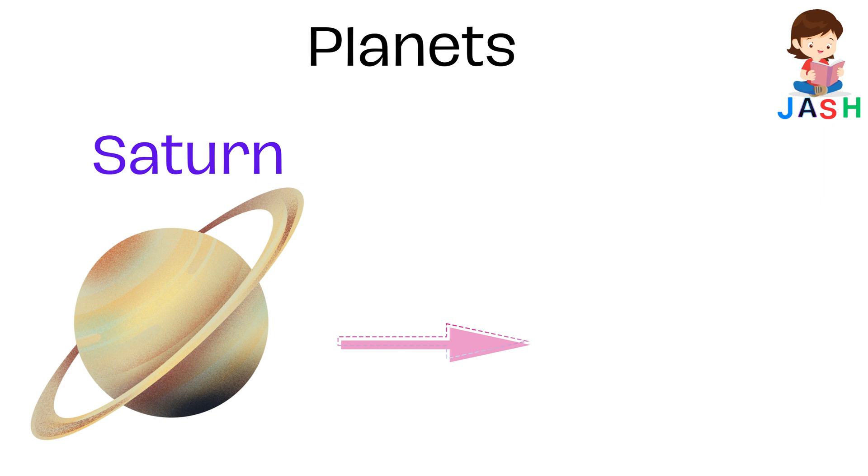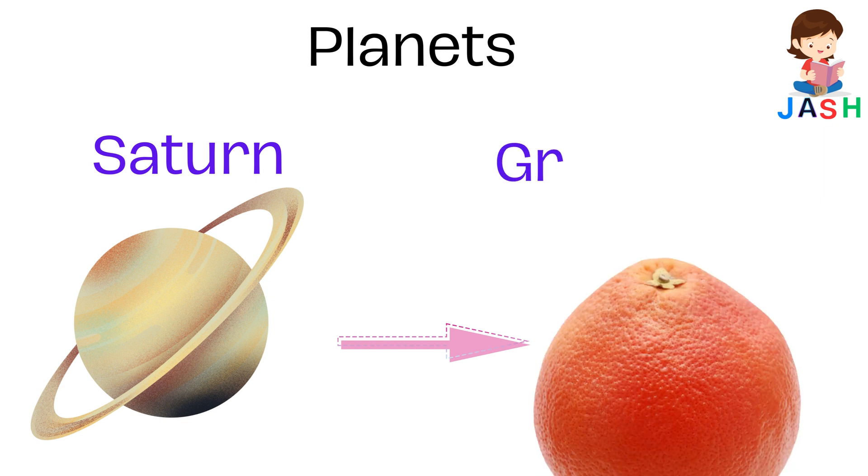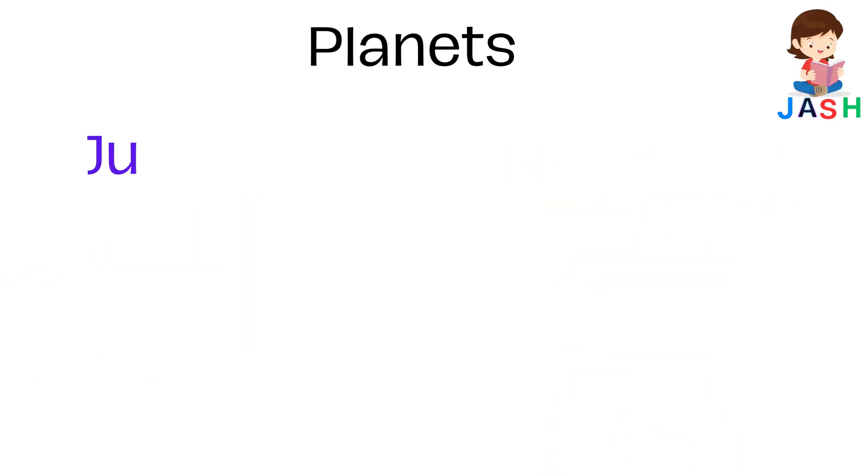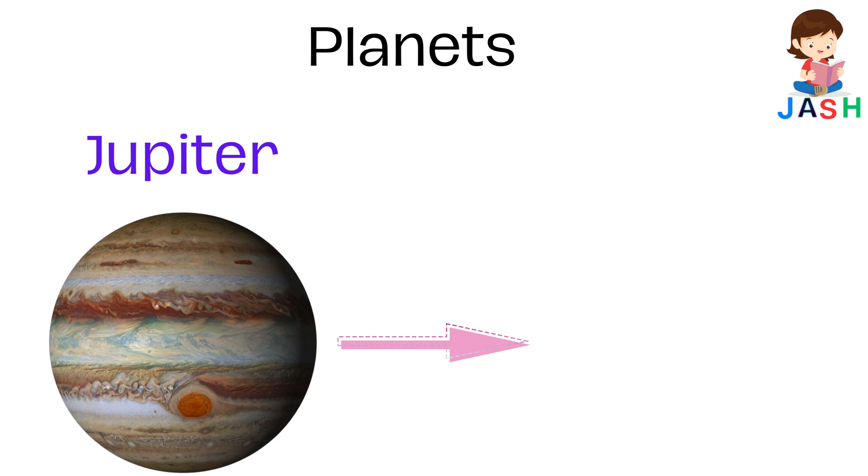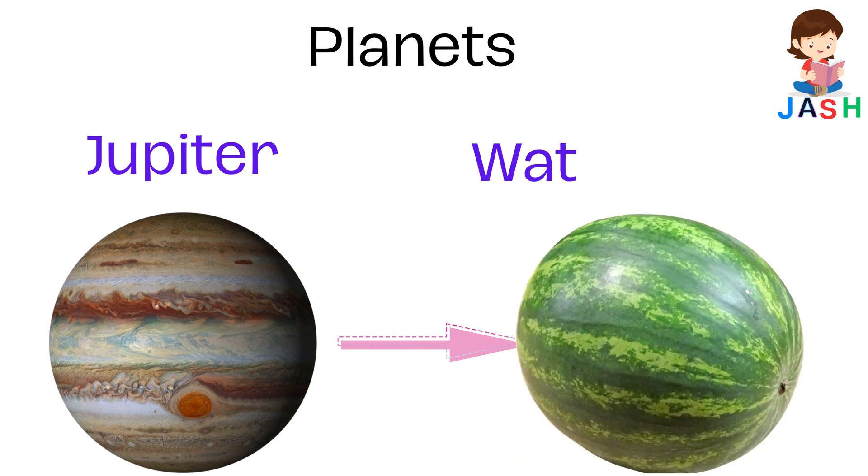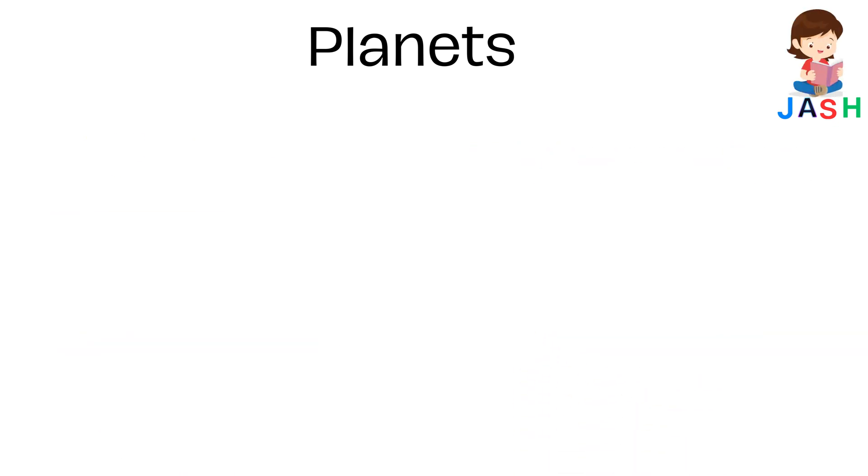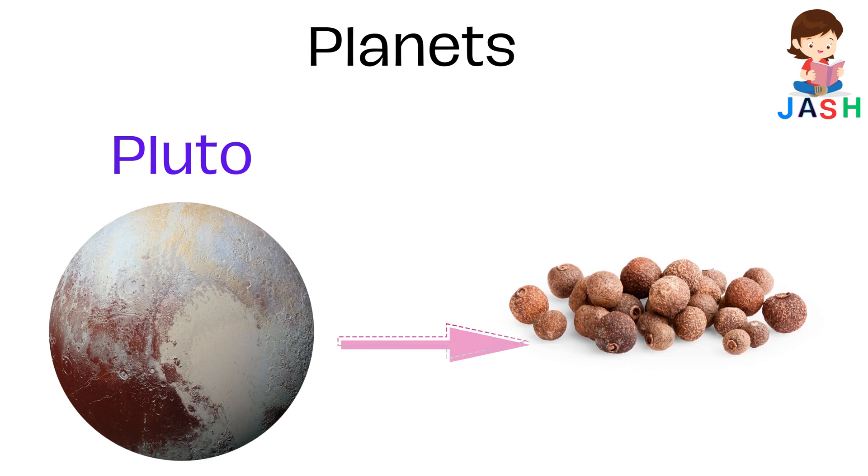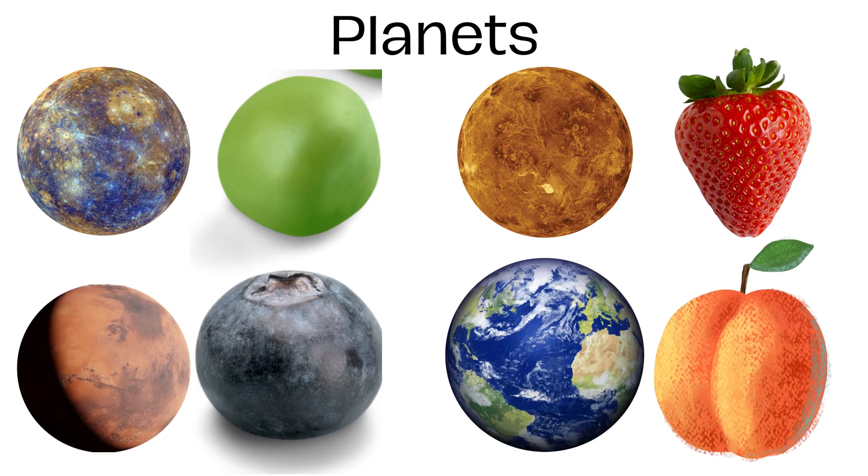Saturn, shape is like grapefruit. Jupiter, shape is like watermelon. Pluto, shape is like peppercorn.